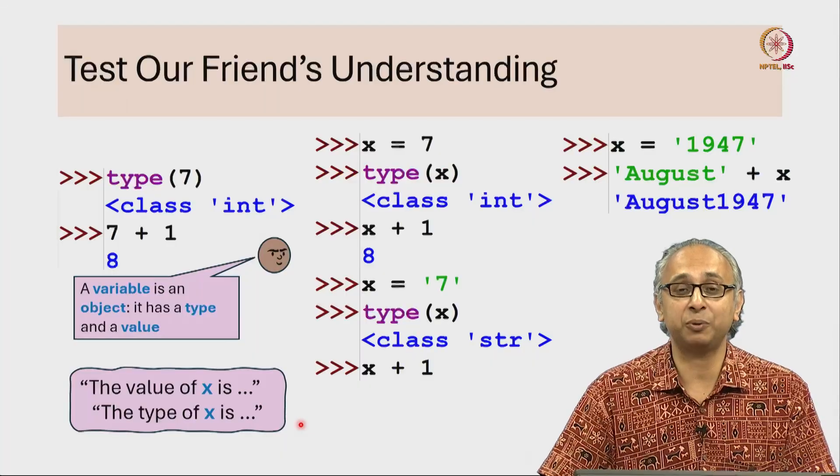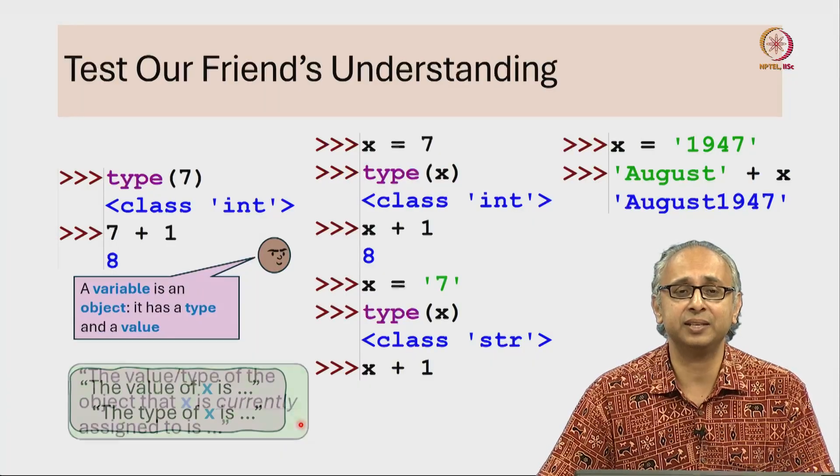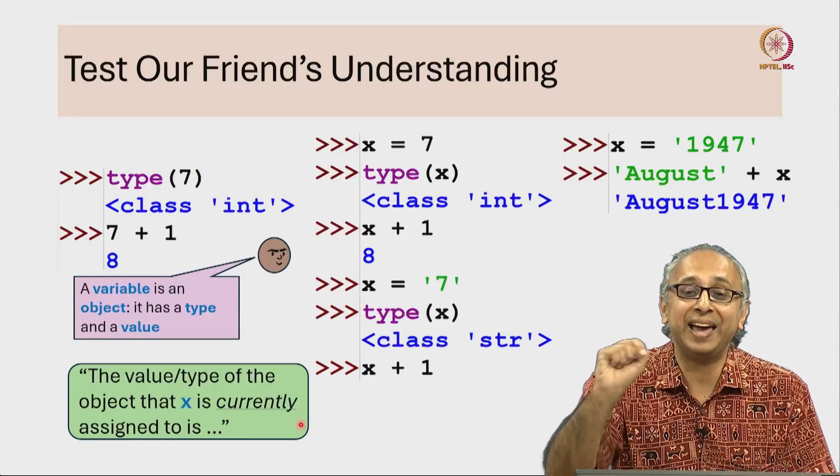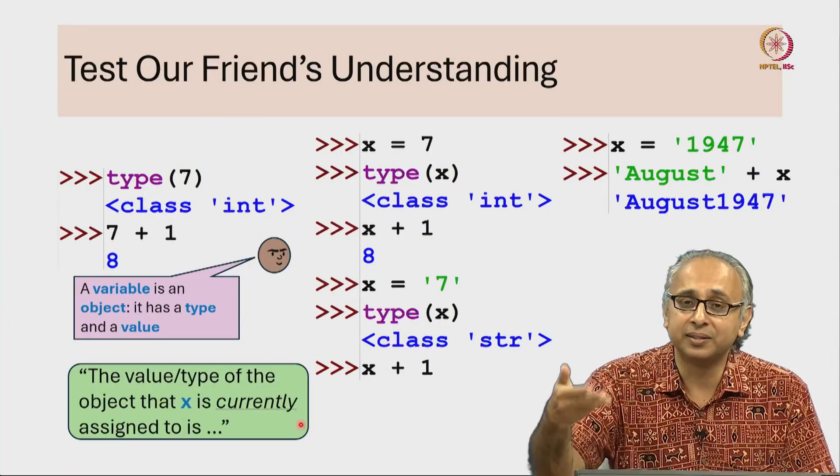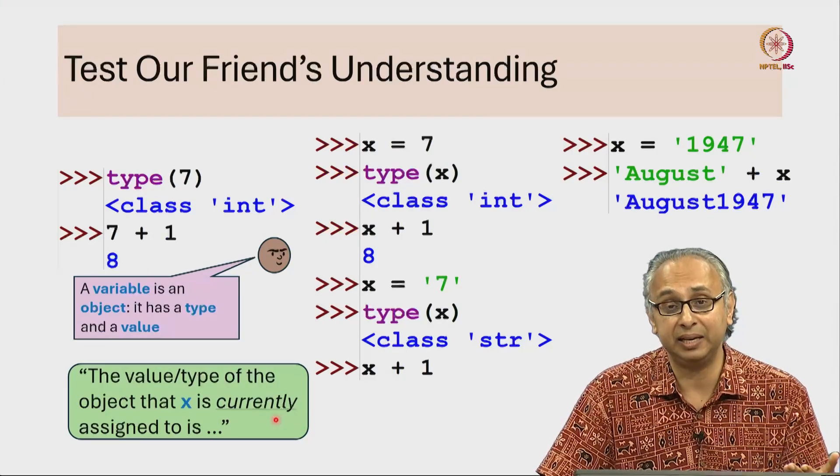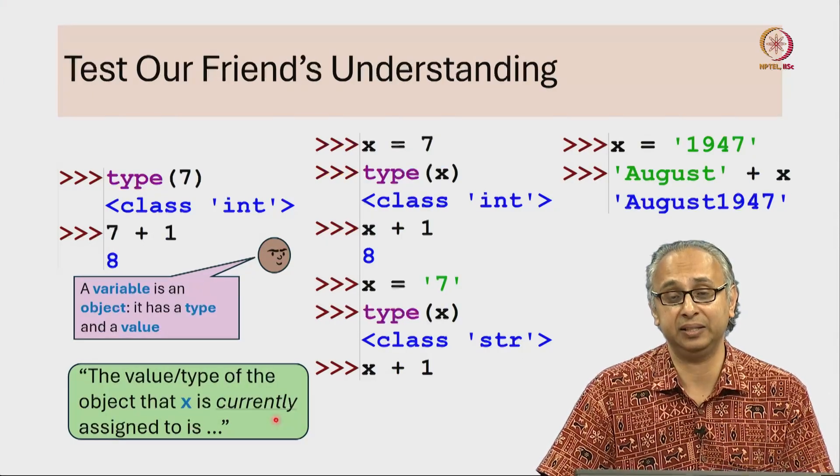A more precise way of saying something like this is that the value or the type of the object that x labels is such and such. And by the way, that is the object that x currently labels or is currently assigned to.